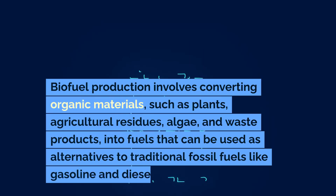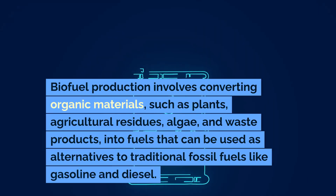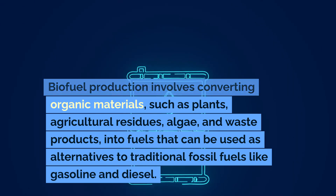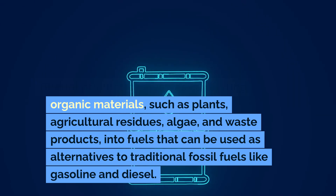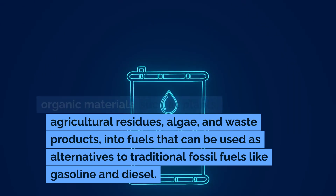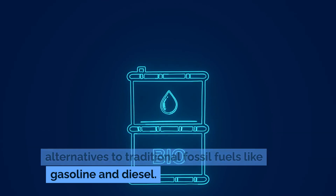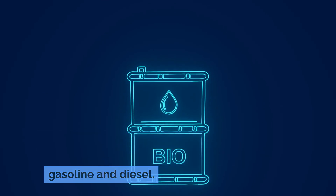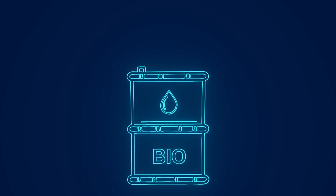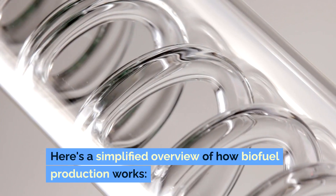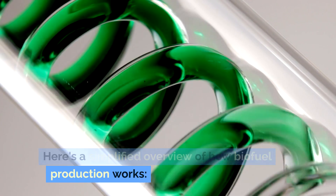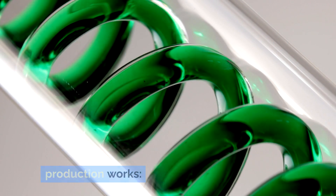Biofuel production involves converting organic materials, such as plants, agricultural residues, algae, and waste products, into fuels that can be used as alternatives to traditional fossil fuels like gasoline and diesel. Here's a simplified overview of how biofuel production works.